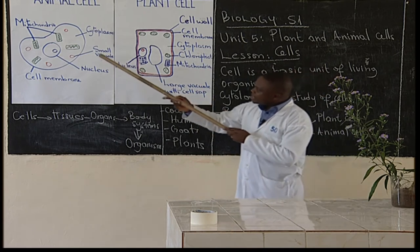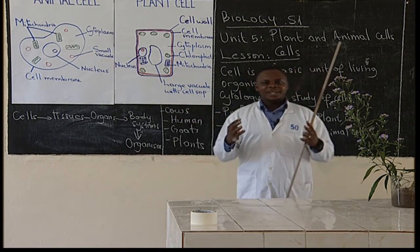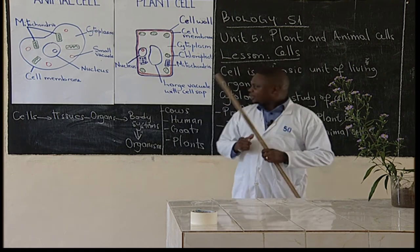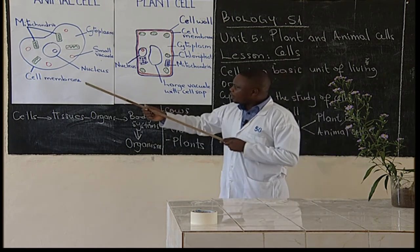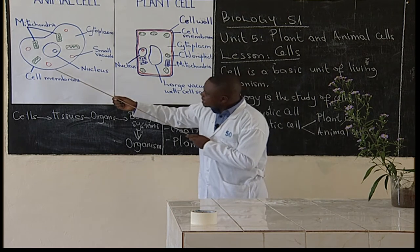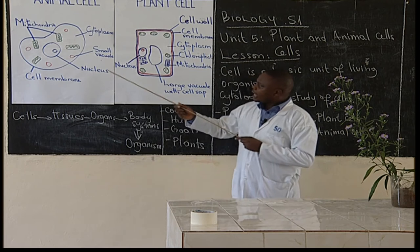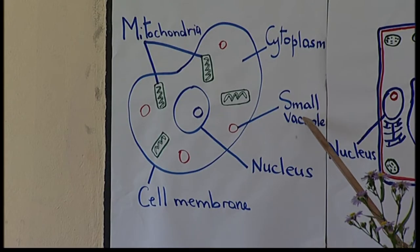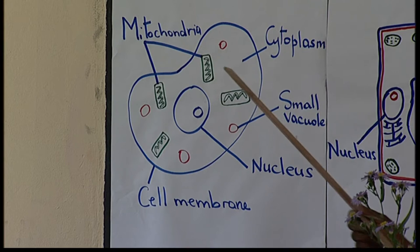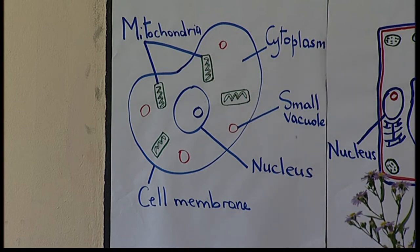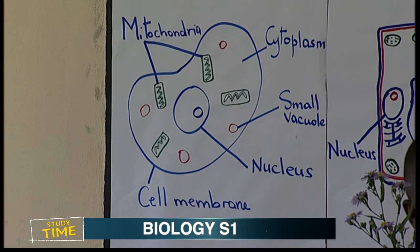This animal cell has different parts. We have what we call cell membrane, which is the outer part of the cell. It also has a nucleus, small vacuole, cytoplasm, and mitochondria. Do you think these parts are important to the cell? Yes, they are very important. Let us see them one by one.